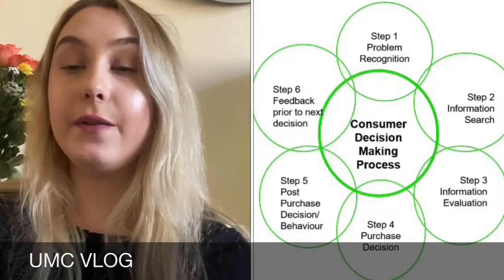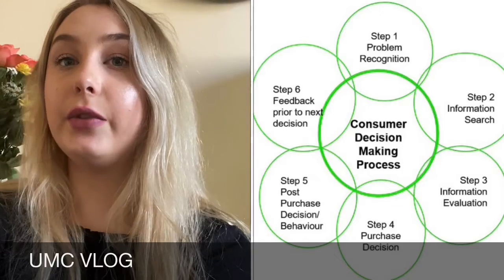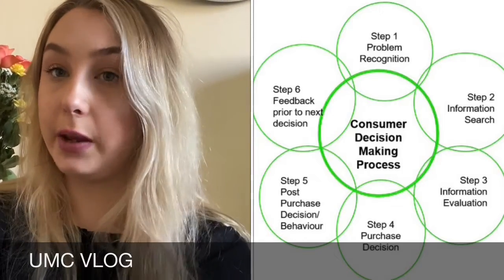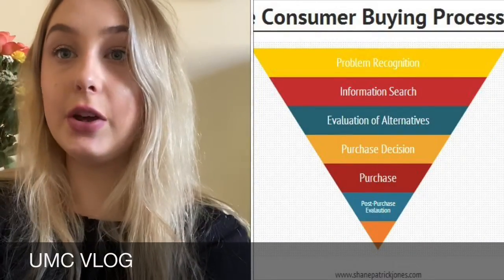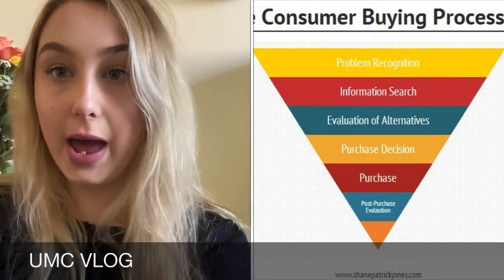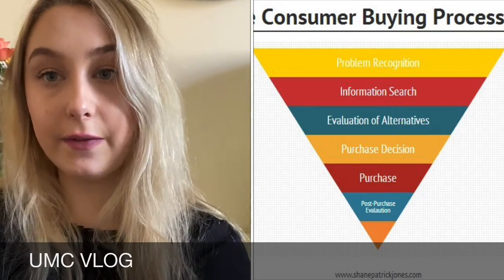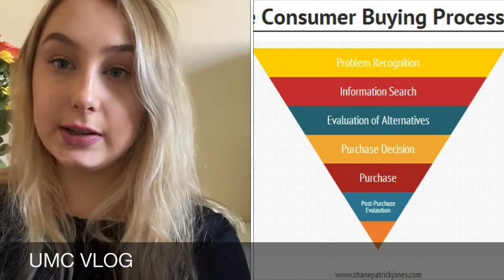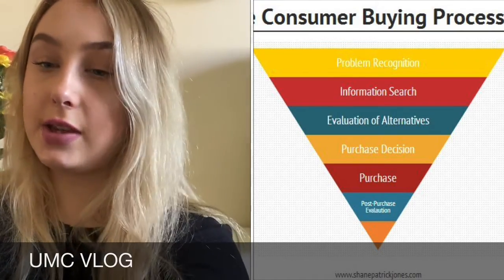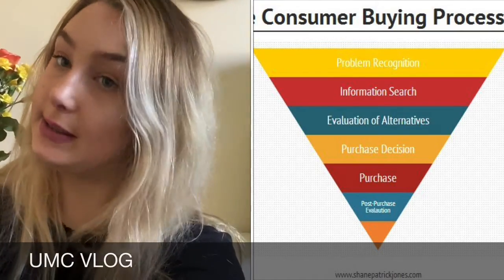For my extended problem solving purchase, which was my car insurance, I used the Gonze and Richardson decision-making model, which you can also compare to the Persia cycle funnel, as both have six stages and the stages are relatively similar.